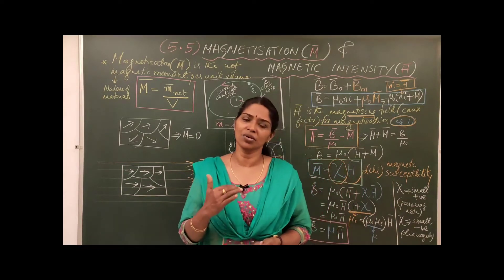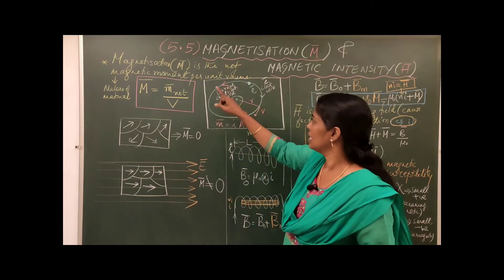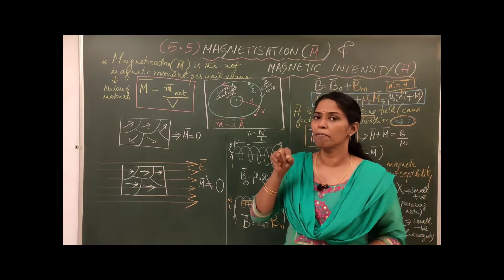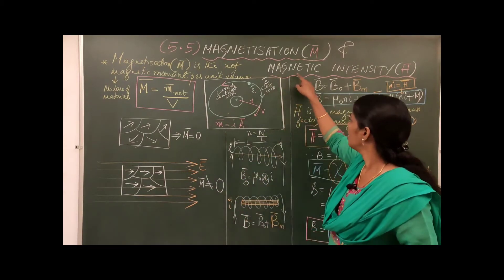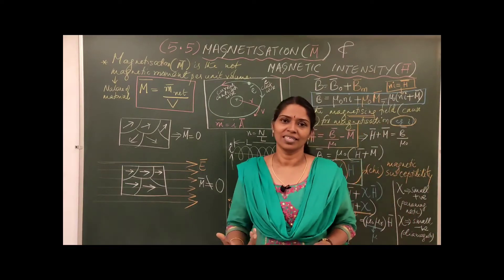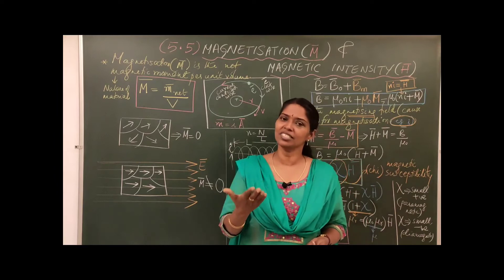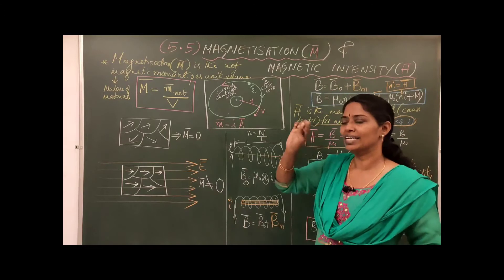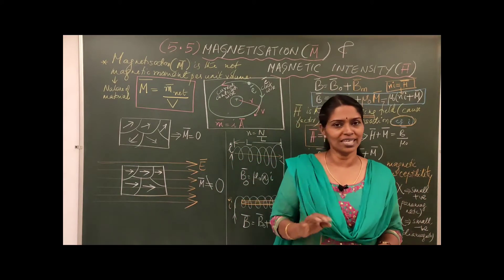Here we are going to familiarize mainly two terms: one is known as magnetization represented by M bar, it is a vector quantity, and magnetic intensity H bar. We know electric field intensity; similarly we have a term known as magnetic intensity, not magnetic field but magnetic intensity. So let us go to the detail.